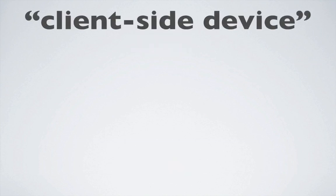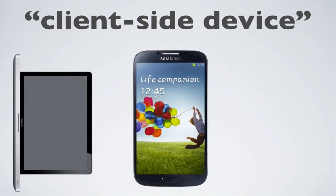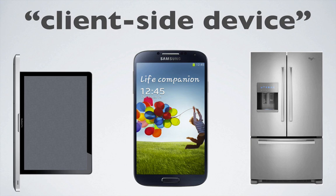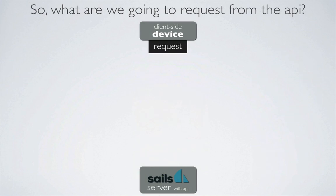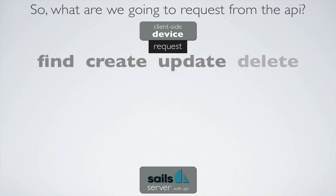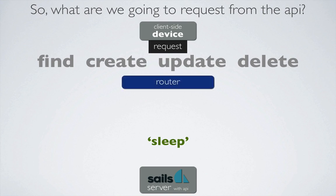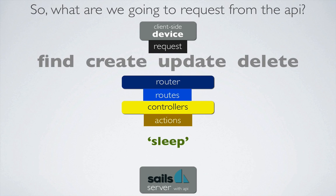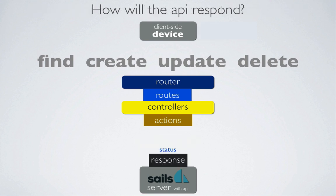We want our client-side device to be able to make requests to our API running on a server and for that API to respond. I'm using the term client-side device very loosely — the device can reside on your lap, your phone, or even your refrigerator. If it can make a request, it can use our API. The requests will interact with the API to either find, create, update, or delete information about our sleep. The API will be listening for our request and using a router, routes, controllers, and ultimately actions to interact with our sleep information in something called a model. The action will then respond to our client-side device with the status of our request and any additional information necessary to fulfill it.